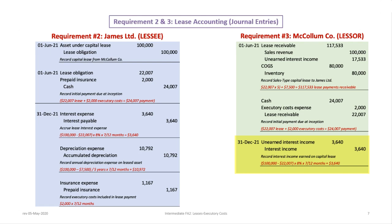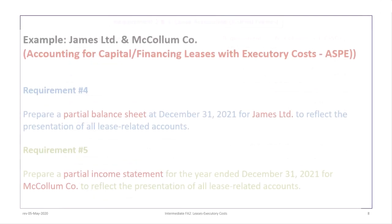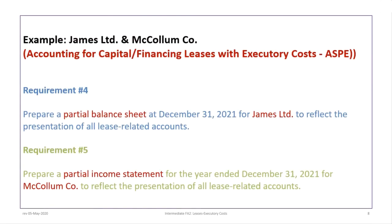Now we can proceed to the last two requirements, four and five, where we will prepare the relevant financial statements. For the lessee, we will prepare a partial balance sheet at December 31st 2021. For requirement five, we'll prepare a partial income statement for the year ended December 31st 2021 with a column to reflect all lease-related accounts, and we'll do the same for both the lessee and lessor.